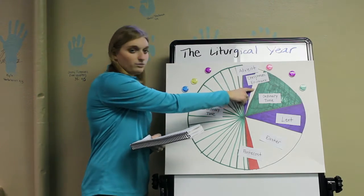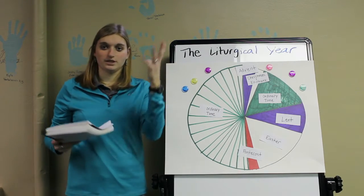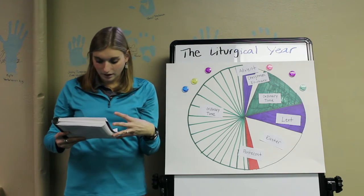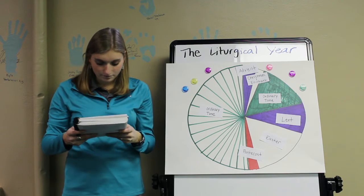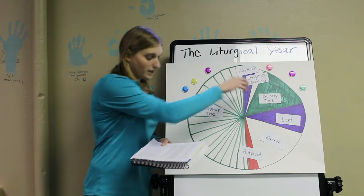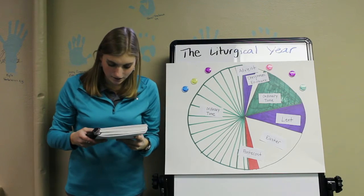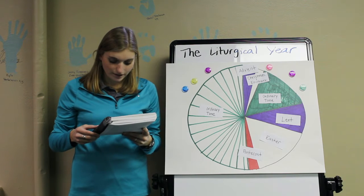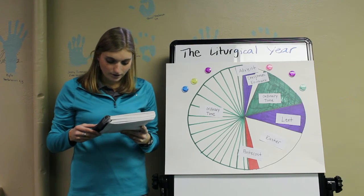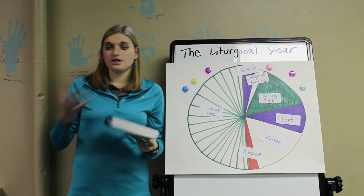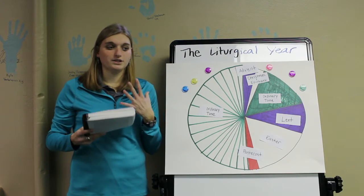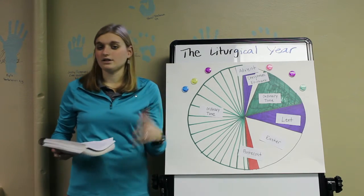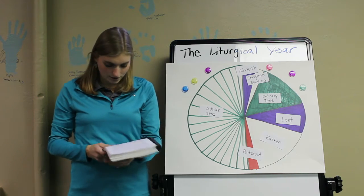Christmas is when we celebrate the incarnation, which means the coming of Jesus down to earth as a human being, and we celebrate his life here on earth. That ends in the culmination on Epiphany on January 6th, which is when we celebrate the manifestation of God through Jesus Christ, a light to the whole world — talking about how Jesus came down to the earth to proclaim about the kingdom of God, as we see throughout the New Testament.